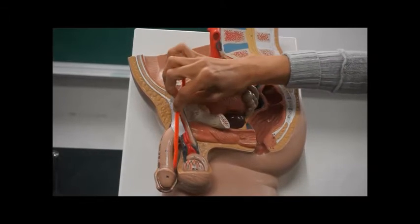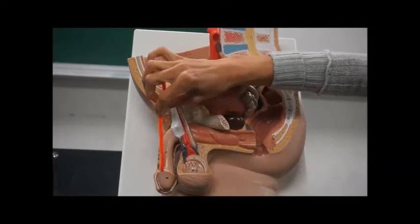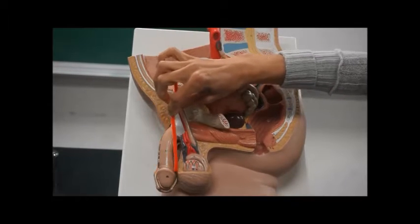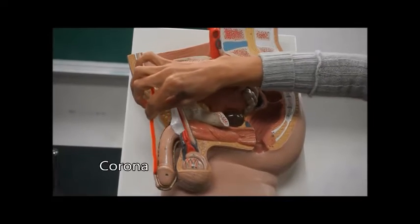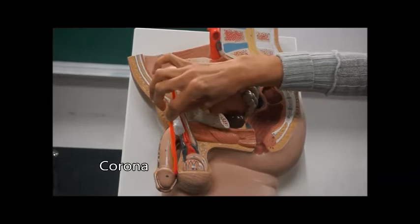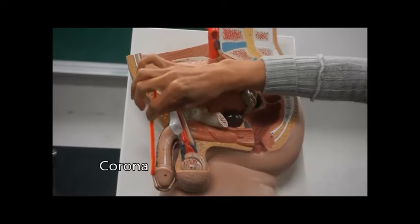This part where it looks like it's extending out, this is called the corona—corona like a crown, so it's a crown on the head of the penis.